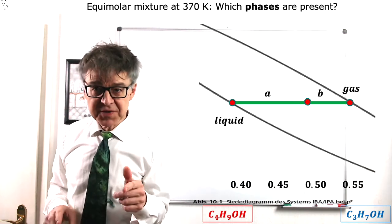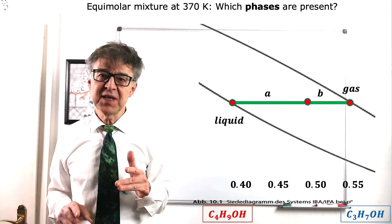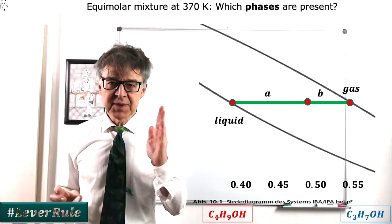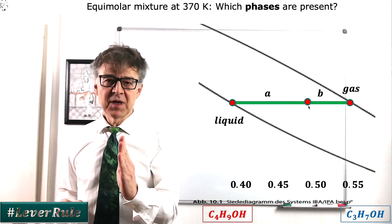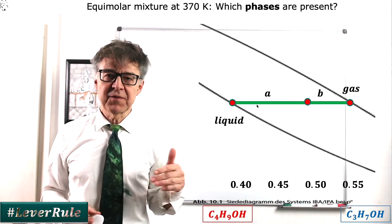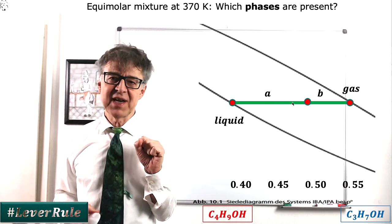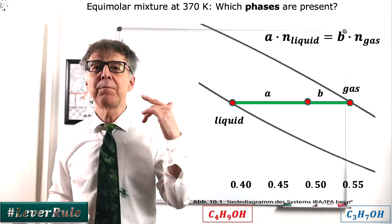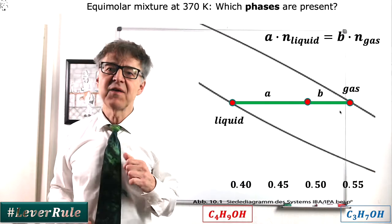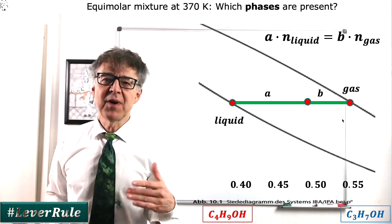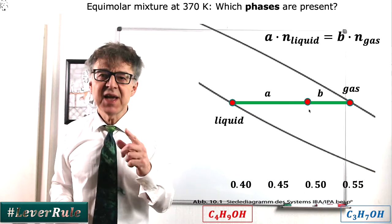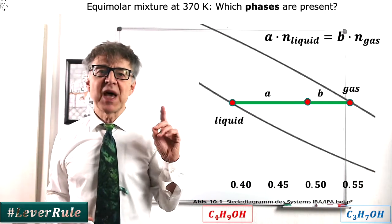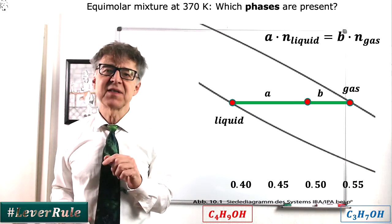If we want to determine the amount of substance in the liquid and the gas phase, we need the so-called lever rule. The tie line is sort of a lever, the mixture being the fulcrum. The lever arm A, the distance from the fulcrum to the left end of the tie line multiplied by the amount of the liquid phase, is equal to the lever arm B, the distance from the fulcrum to the right end of the tie line multiplied by the amount of the gas phase. In our case, A is about twice the size as B, which means that we have twice as much gas phase as liquid phase.